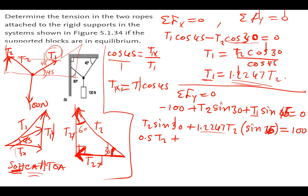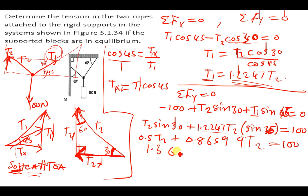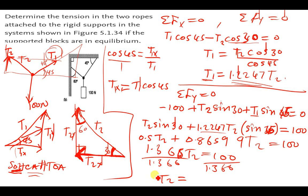Adding the two terms: 0.5 T2 + 0.8659 T2 equals approximately 1.3659 · T2 = 100. Dividing 100 by 1.3659, the value of T2 is approximately 73.2 newtons.